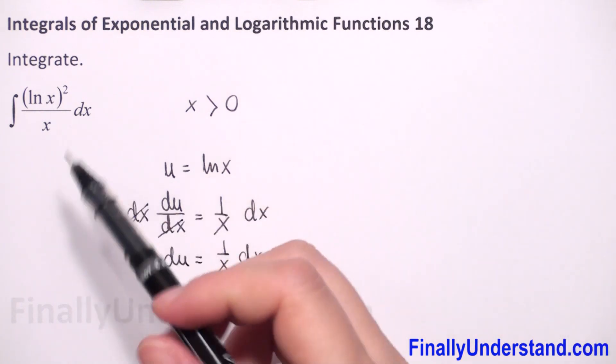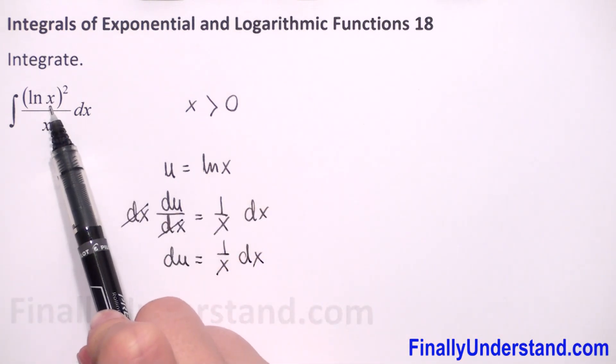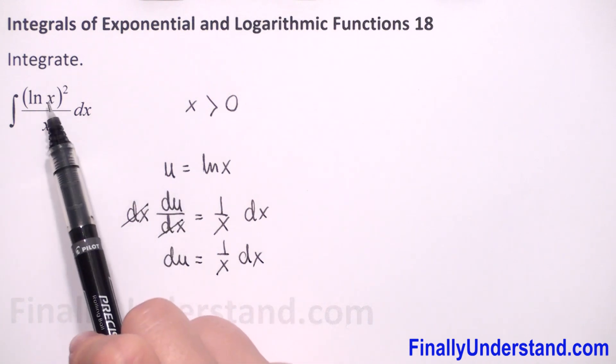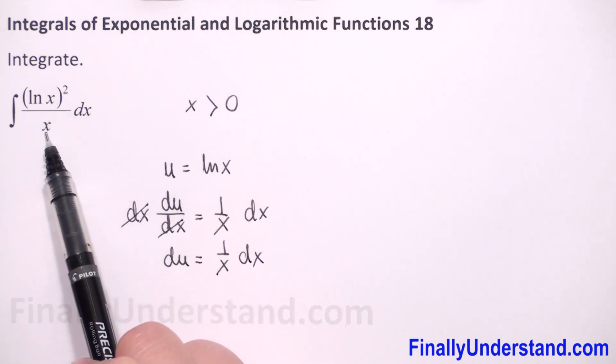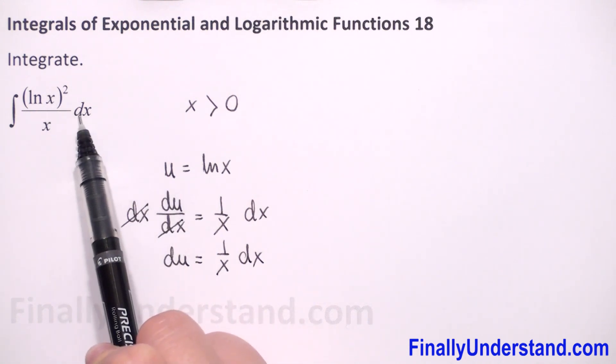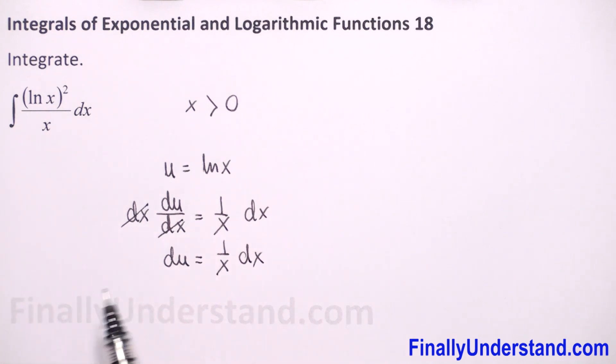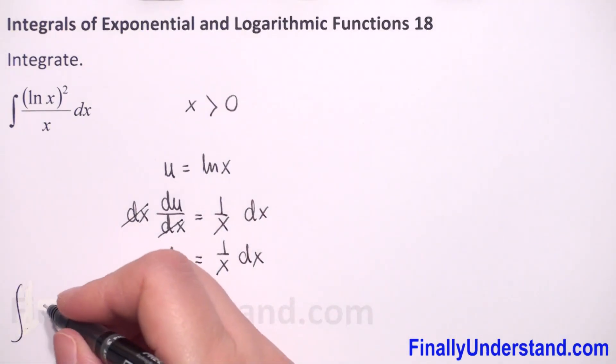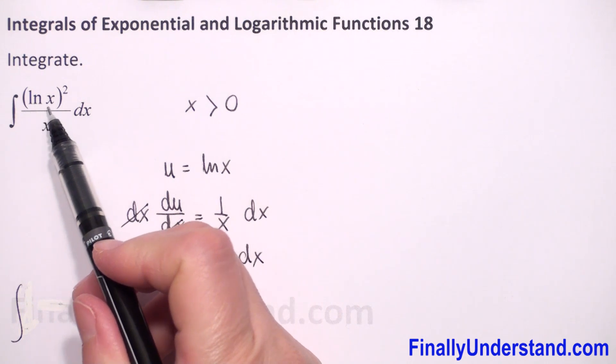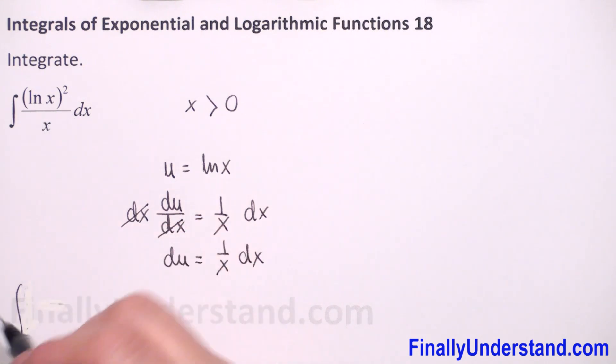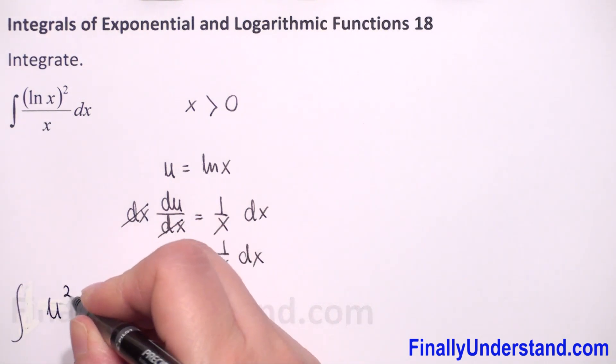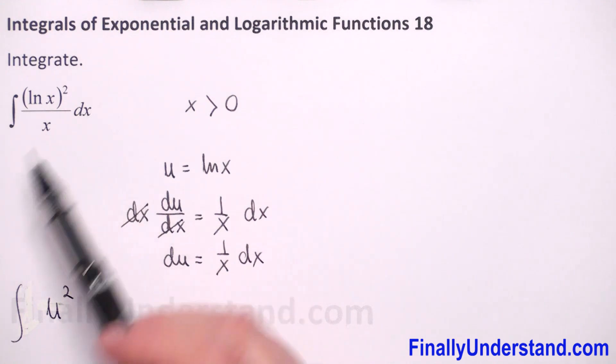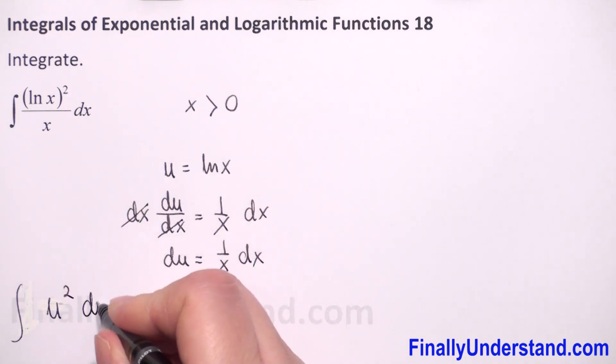Let's see. When we substitute natural logarithm of x by u, we will have u squared in the numerator. We have x and dx. x dx is equal to du. So everything is okay. We can substitute. We have the indefinite integral of... for natural logarithm of x squared, we will put u squared, and dx over x is du.